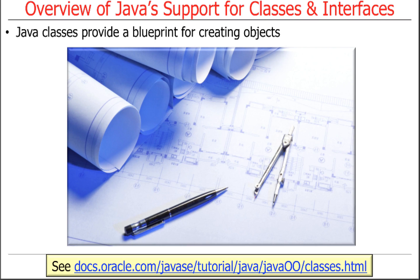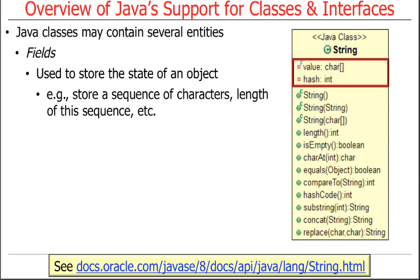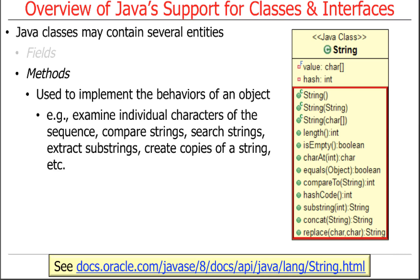Java supports abstraction through its language features. Classes are a blueprint for making objects. They've got fields — like a string — which store the state of an object like the sequence of characters, the length, and so on. And then we've got methods, which are used to implement the behaviors — things like checking the length of the string, comparing strings, checking for a substring, making a subsequence, making a copy — all the things that are the behavior of the class.